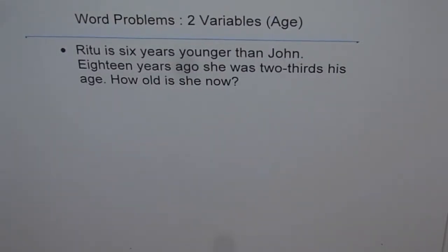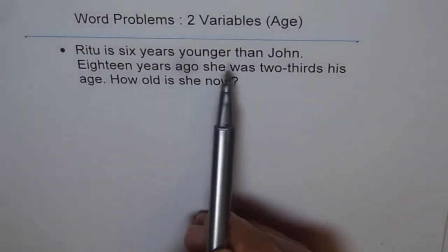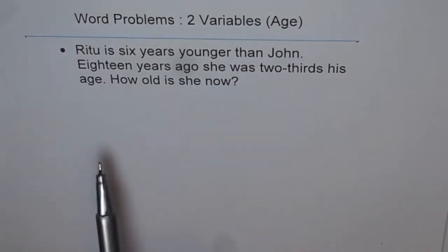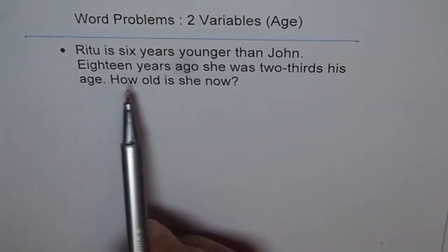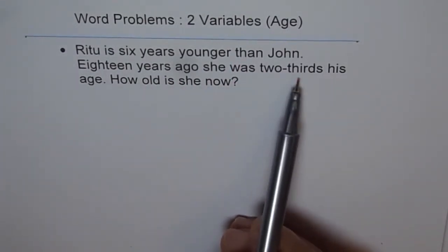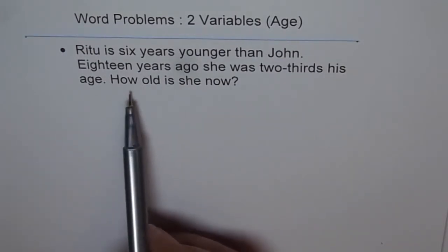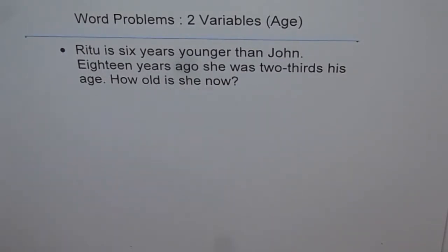Let's understand how to solve word problems involving age. The question here is: Ritu is six years younger than John. Eighteen years ago, she was two-thirds his age. How old is she now?